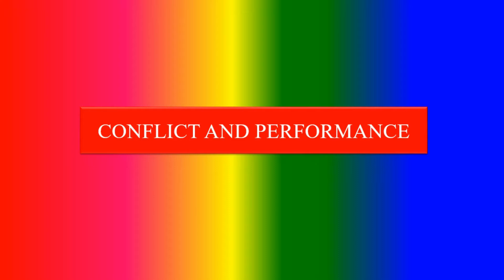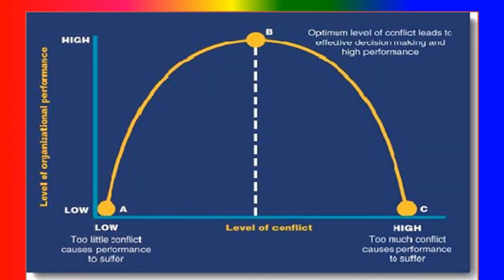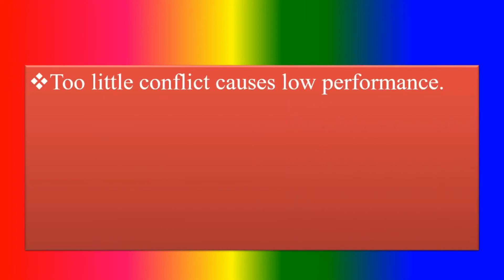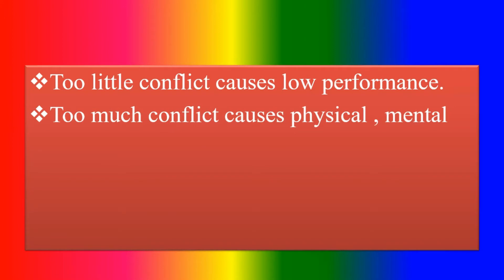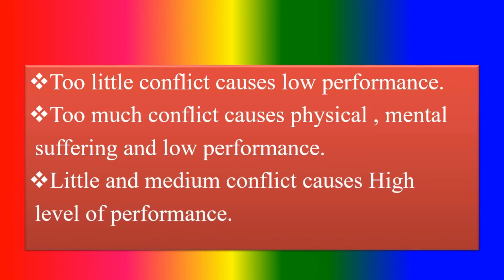Conflict and Performance: A — no conflict, there is no performance. B — optimum conflict, high performance. C — high conflict or too much conflict, there is no performance. Optimum level of conflict is essential for high performance. Too little conflict causes low performance; too much conflict causes physical and mental suffering and low performance; medium conflict causes high level of performance.